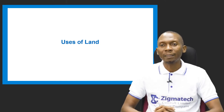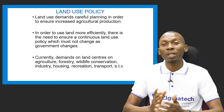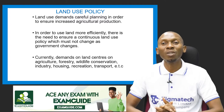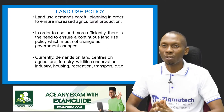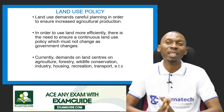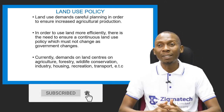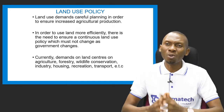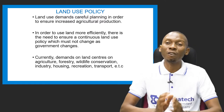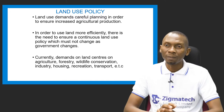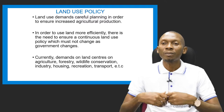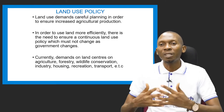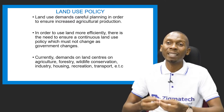Land use demands careful planning in order to ensure increased agricultural production. Without land, you cannot engage in agricultural production. The government needs to ensure a continuous land use policy so that the acquisition and management of land is achieved with less difficulty.